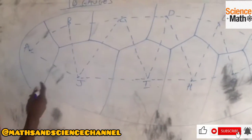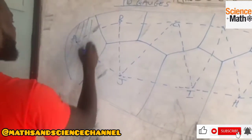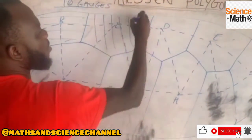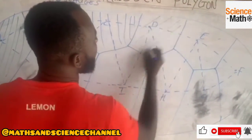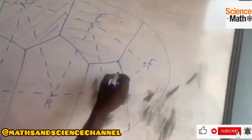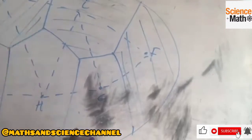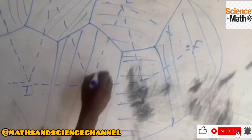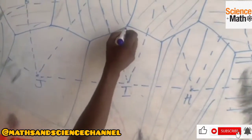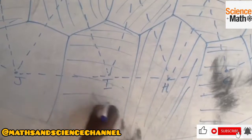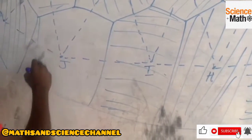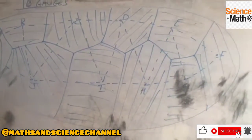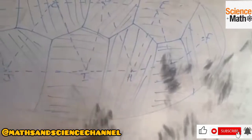All right, so let me do the markings: region A, region B, region C, region D, region E, region F, region G, region H, region I, region G. And these are the regions. So we have regions A, B, C, D, E, region F, region H, region I, and G.